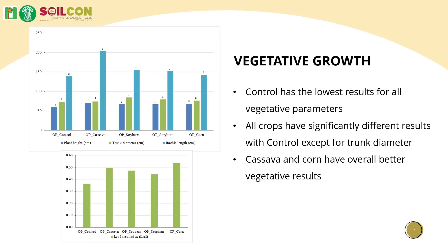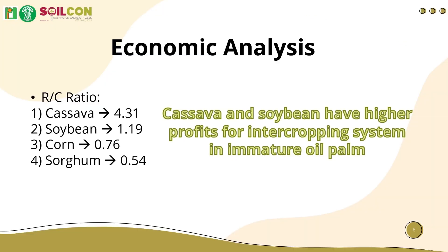The intercropping system will not hinder the growth of the main crop, oil palm, if both crops have sufficient nutrients — as seen in the cassava and corn plots. From an economic perspective, we recommend the order of most feasible crops as cassava, soybean, corn, and sorghum for immature oil palm intercropping systems with higher profits.